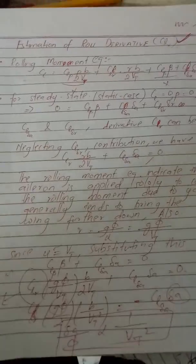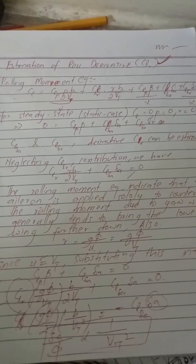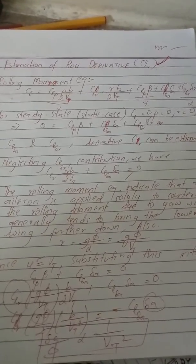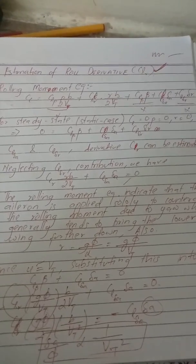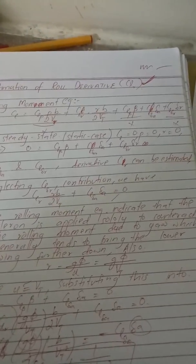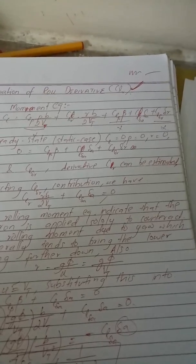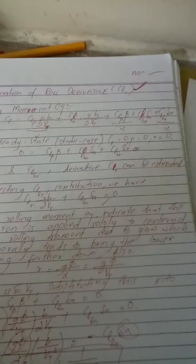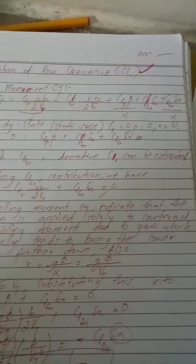Sticking to the point now — the rolling moment equation is in front of you. It includes CLP due to the vertical tail times (PB / 2VT), CLR due to the rudder times (RB / 2VT), CLλA due to the aileron, and CLλR times λR which is also due to the rudder.